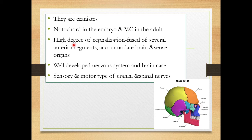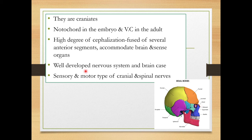There is a high degree of cephalization, meaning the formation of a head by the fusion of several anterior segments to accommodate the brain and sense organs. There are four pairs of cranial bones to form the skull. There are a total of 29 facial bones. The four pairs of cranial bones are frontal bones, parietal bones, occipital bones, and temporal bones, each in pairs.